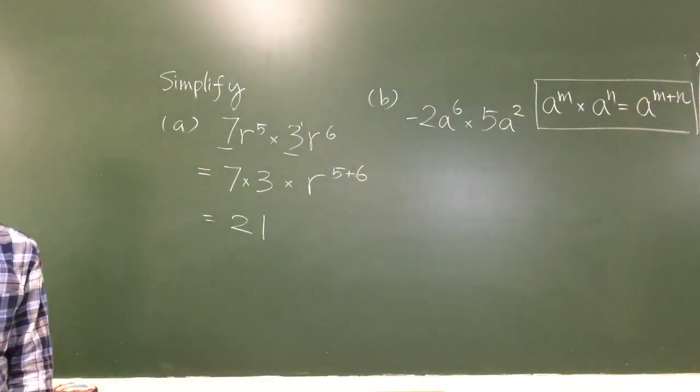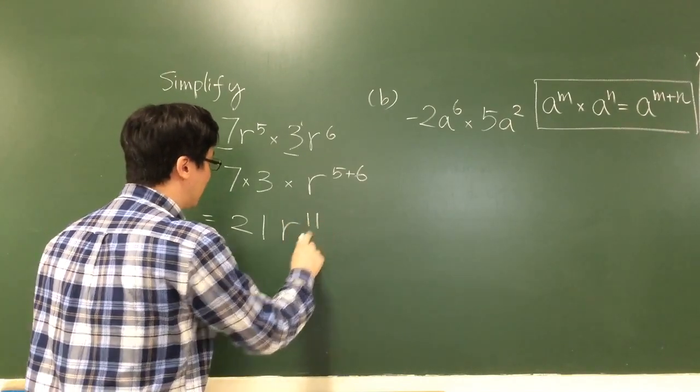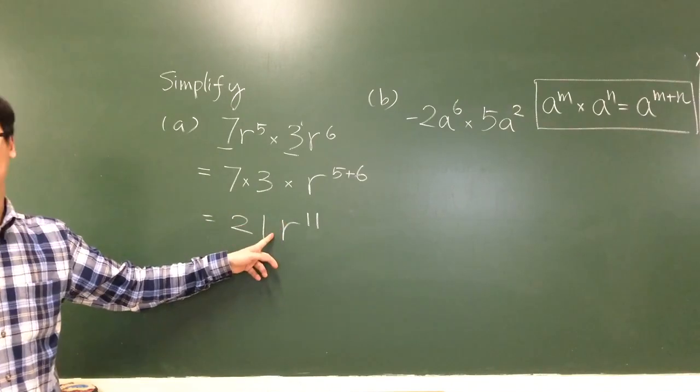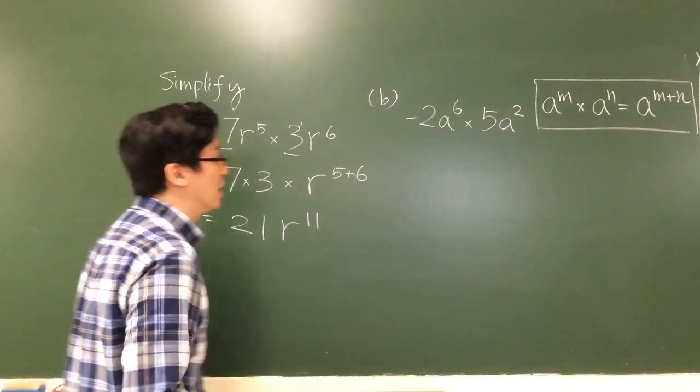And therefore this is 21 times r to the 11. We don't need to write down the multiply symbol in here. 21r to the 11, that's the answer.